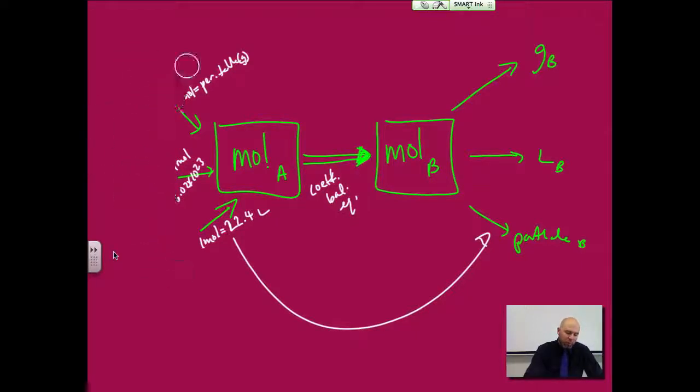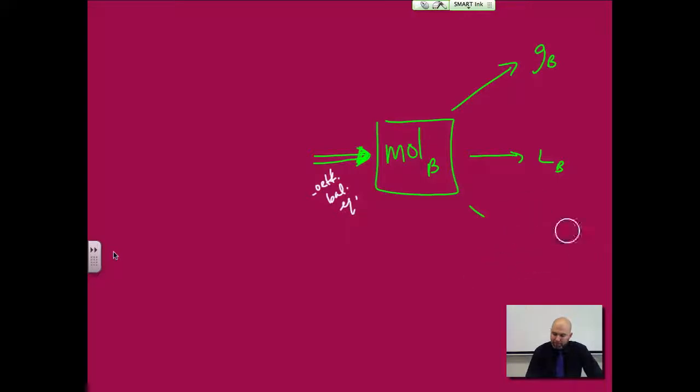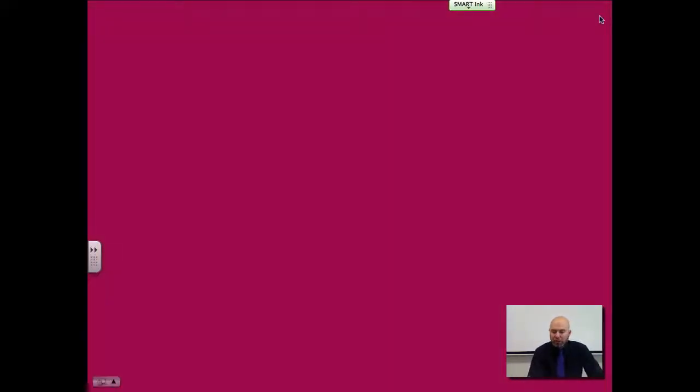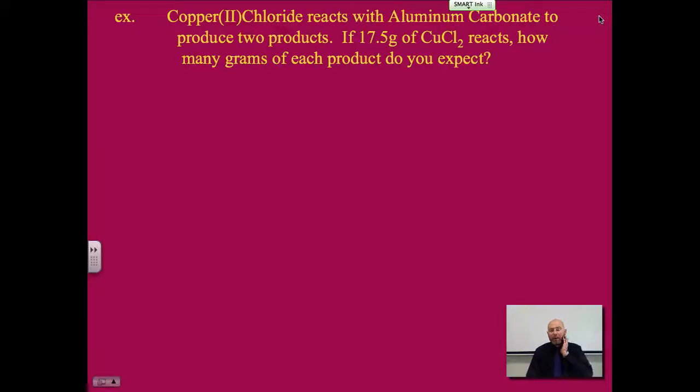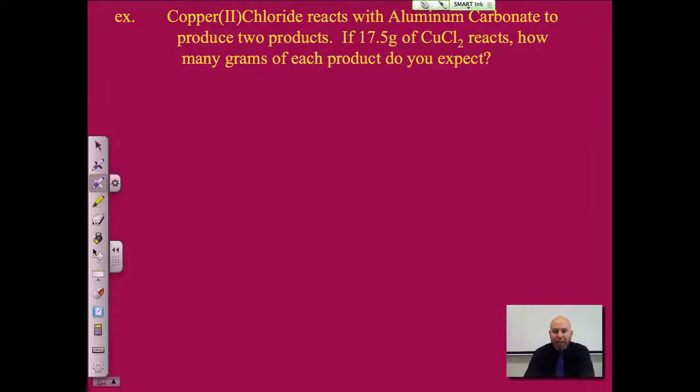Hopefully we know which way we're going. So let's go ahead and review that by doing a problem. And I'm going to try to kill a couple birds with the same stone here, where I'm not giving you the balanced equation. We get to review how to balance equations. So Copper(II)Chloride reacts with Aluminum Carbonate to produce two products. If, now what I would say, the first thing we probably need to do is write a balanced equation.